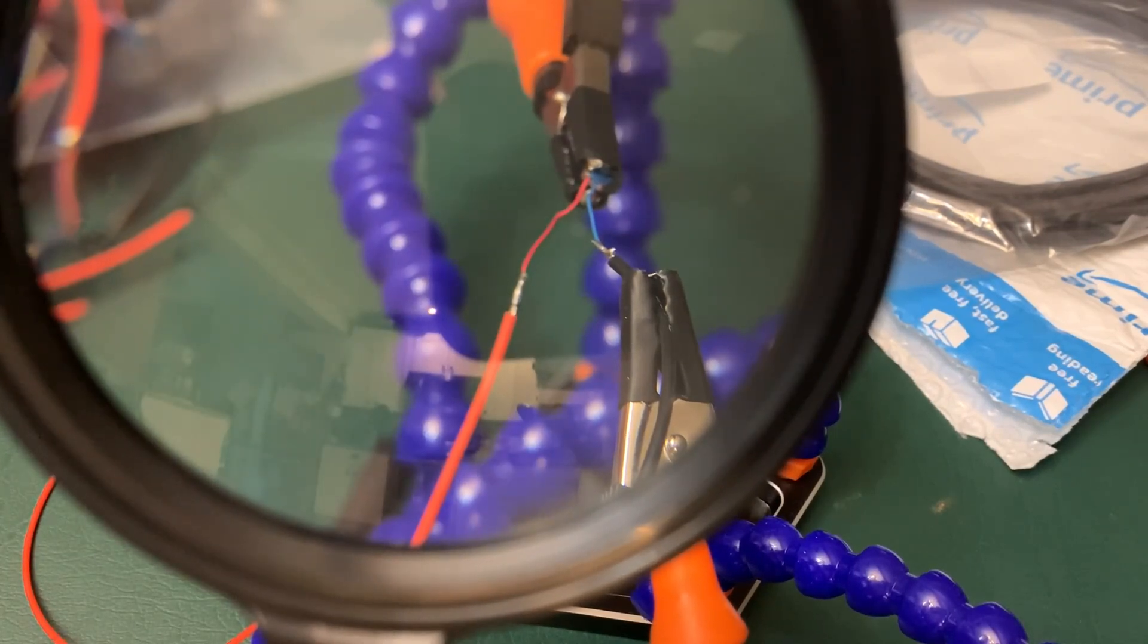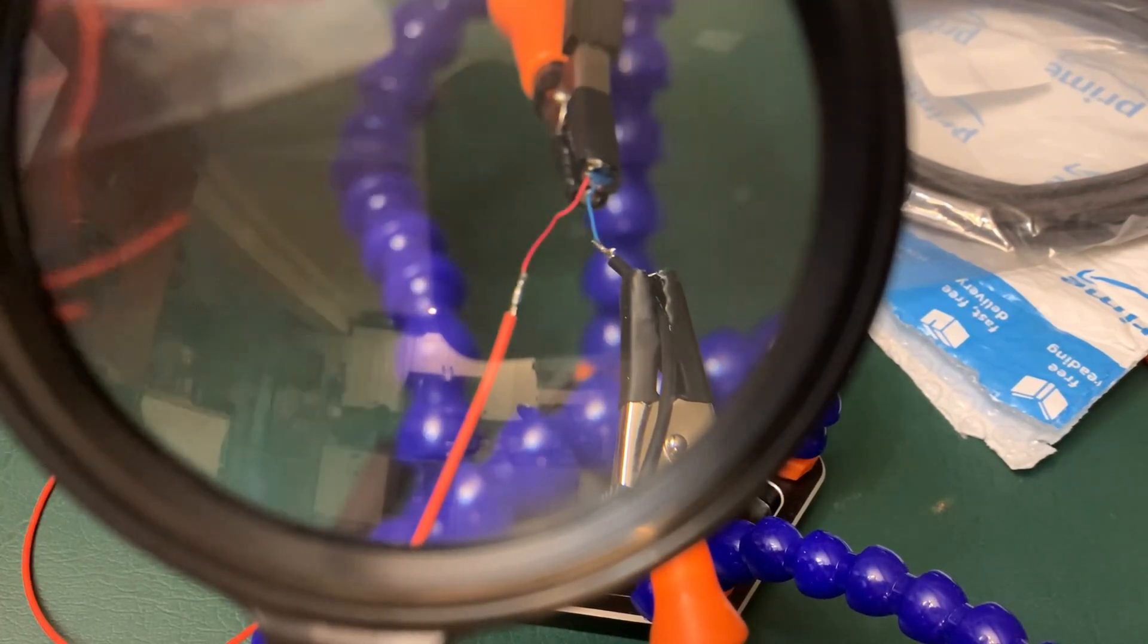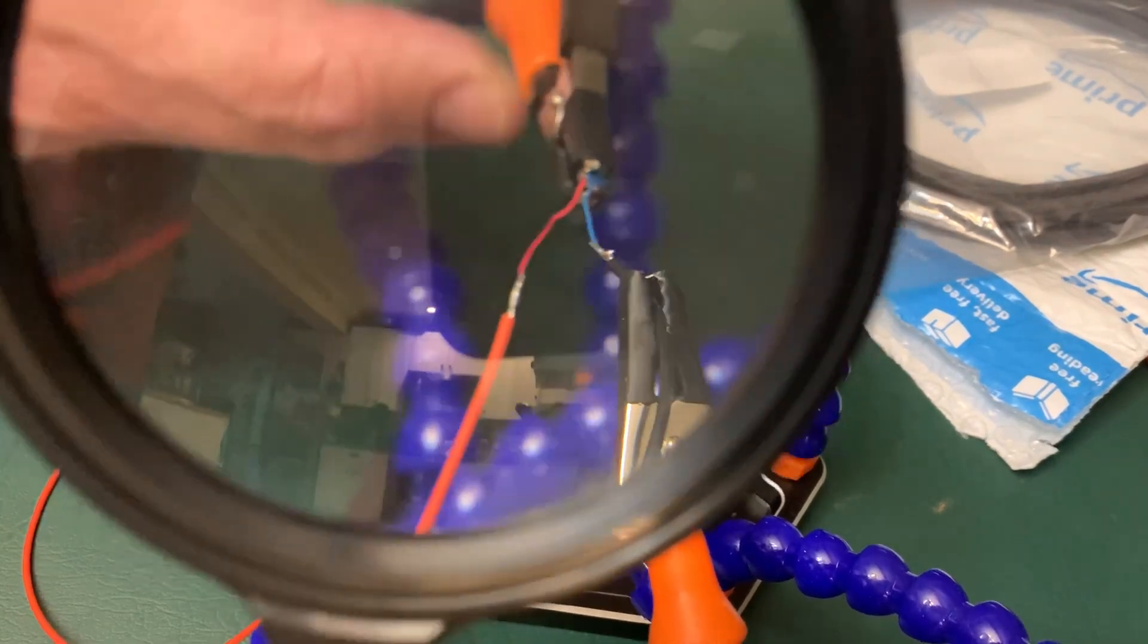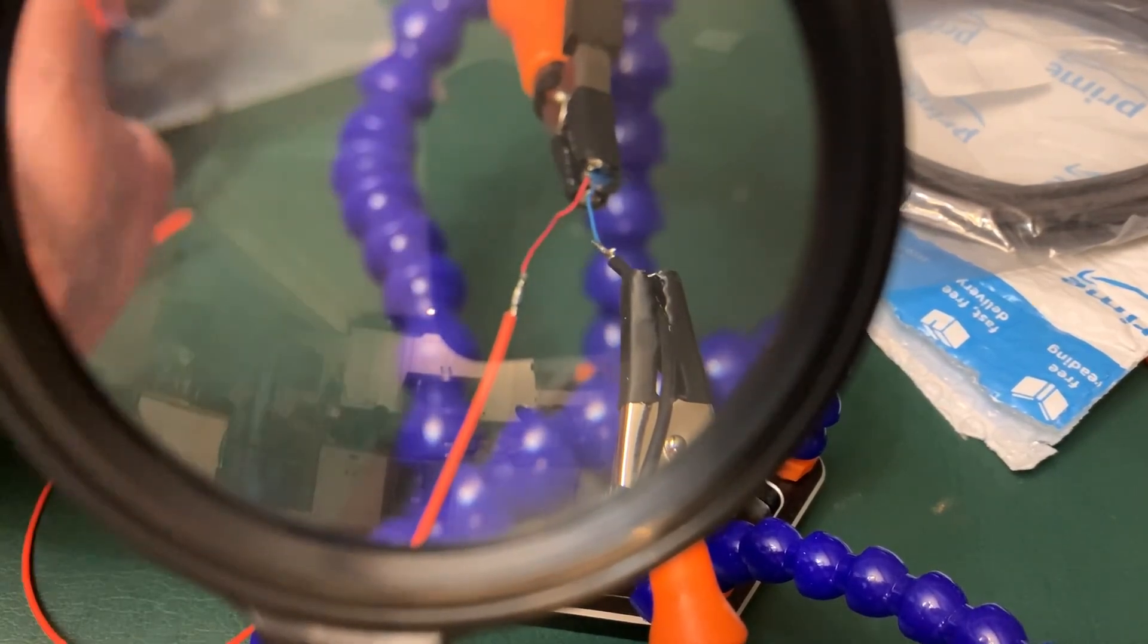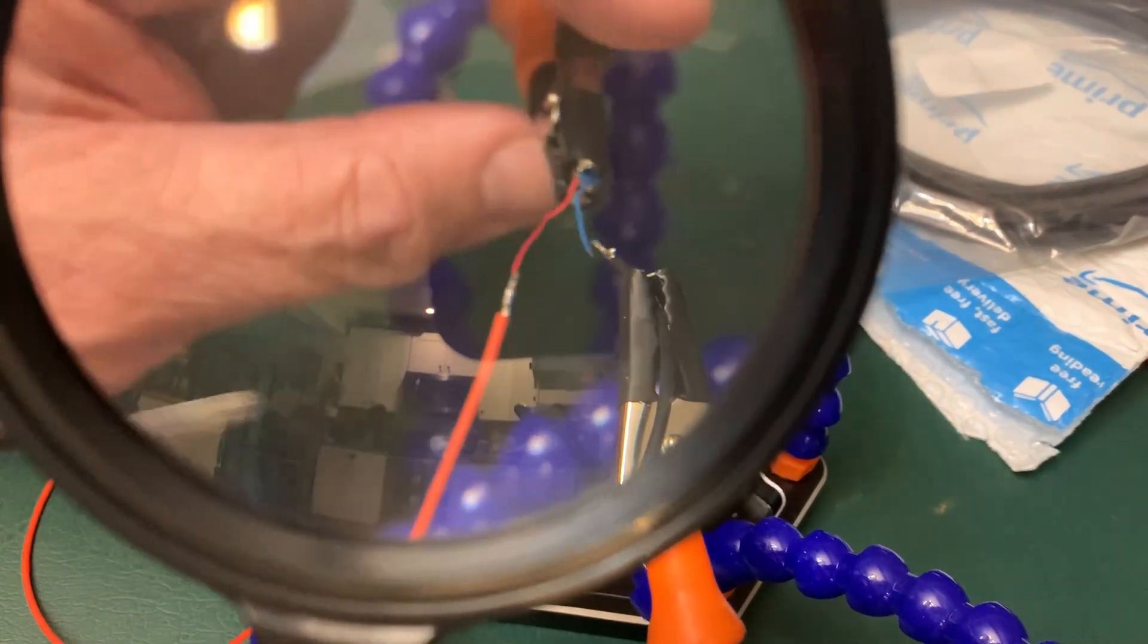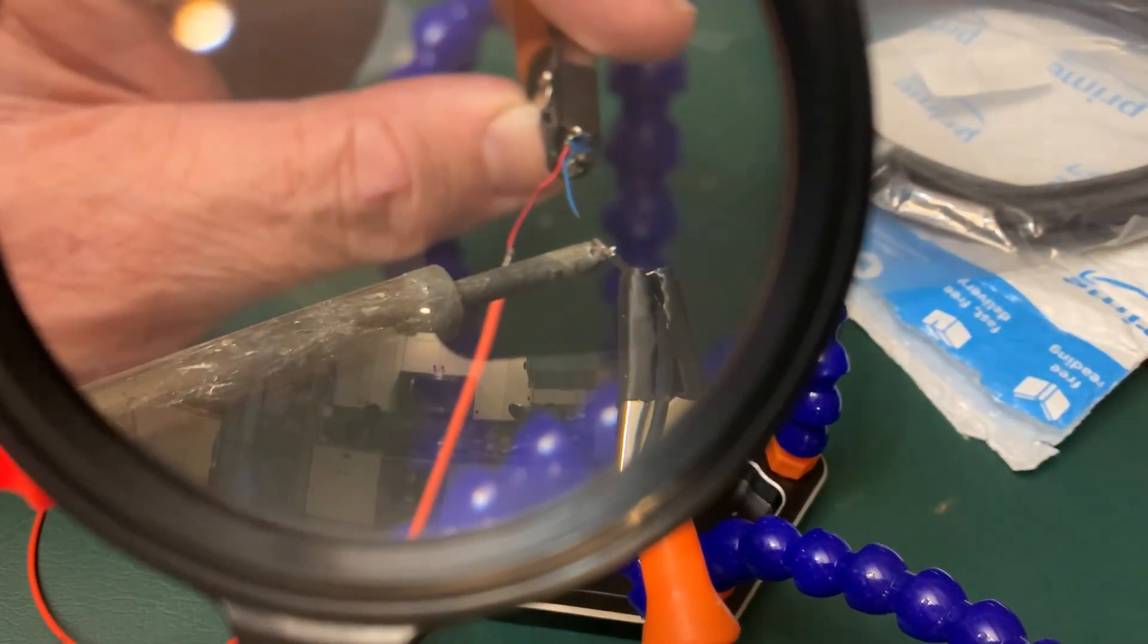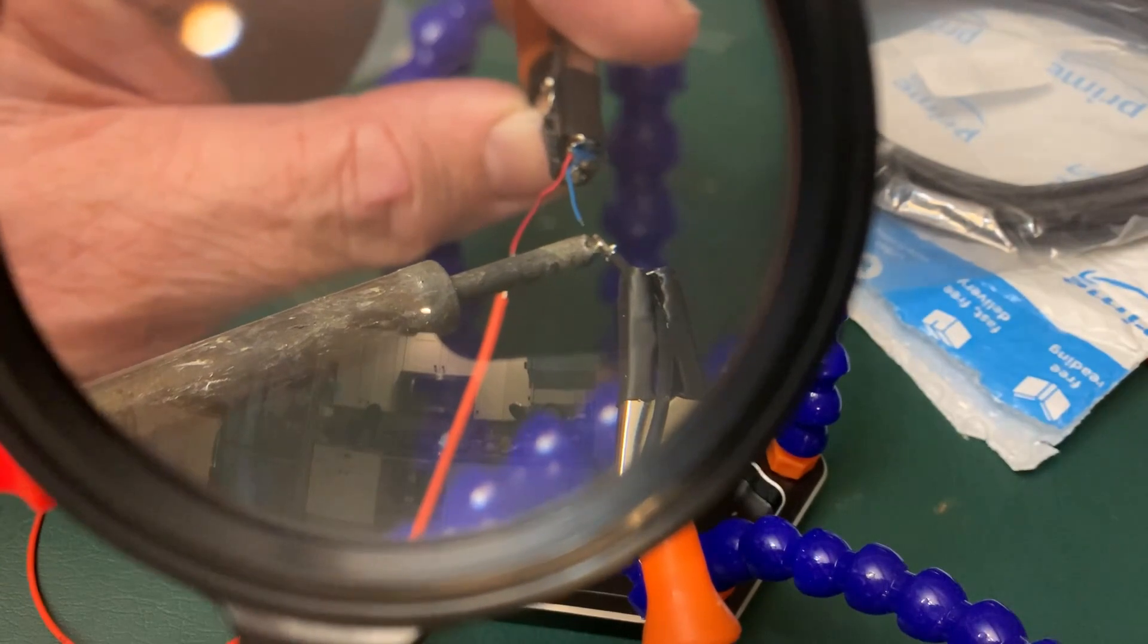This helping hands has multiple helping hands, so instead of having to hold it with, or have the alligator clip hold one, and then the other one be held with tweezers, this allows me to reach in here and melt the solder.